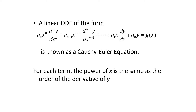You can tell it's a Cauchy-Euler equation if the power on the x coefficient is the same as the order of the derivative it's paired with.